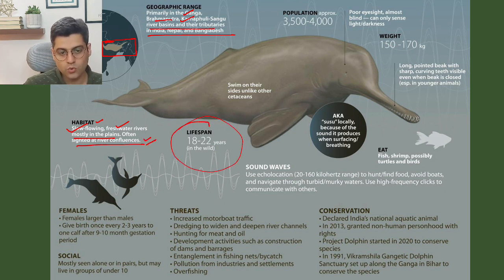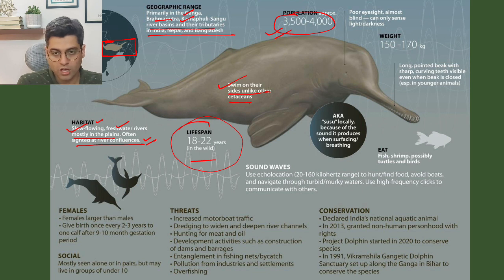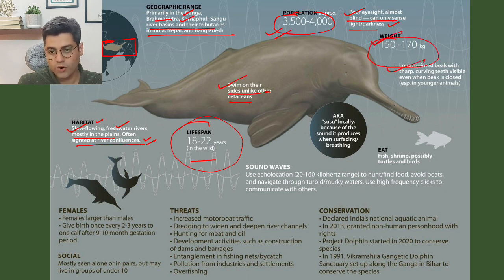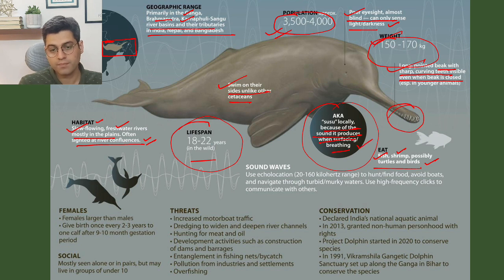Lifespan is 18 to 22 years in the wild. They swim on their sides, unlike other cetaceans. Population is approximately 3,500 to 4,000. Their eyesight is very poor — almost blind, they can only sense light and darkness. Weight is 150 to 170 kg. They have a long pointed beak with sharp curving teeth visible even when the beak is closed. They eat fish, shrimp, possibly turtles and birds. They are locally known as susu because of the sound produced when surfacing or breathing.